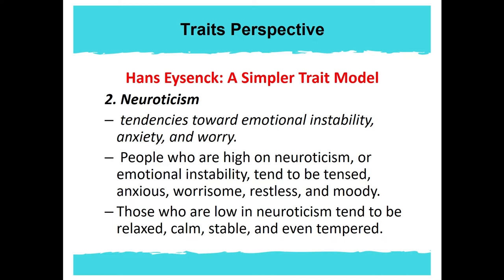Another dimension is neuroticism — tendencies toward emotional instability, anxiety, and worry. People who are high on neuroticism tend to be tense, anxious, worrisome, restless, and moody. Those who are low in neuroticism tend to be relaxed, calm, stable, and even-tempered. This is actually where the word 'neurotika' came from.